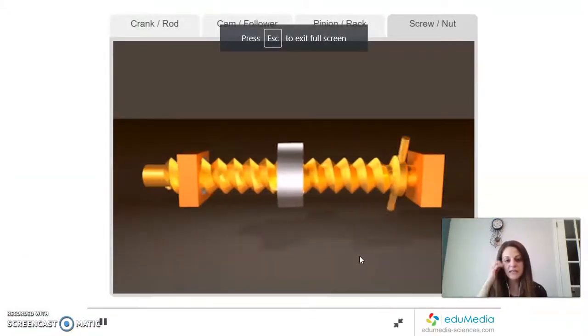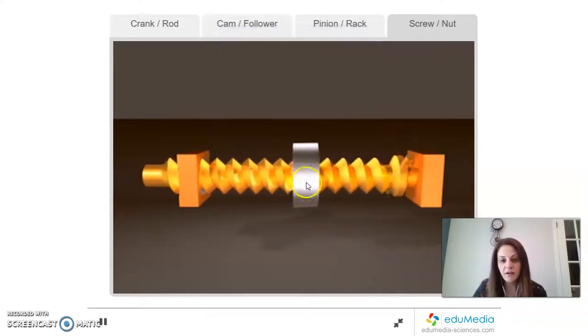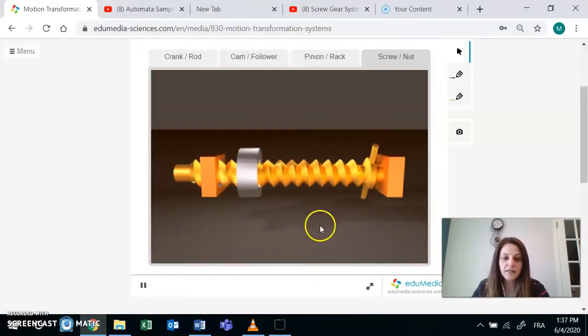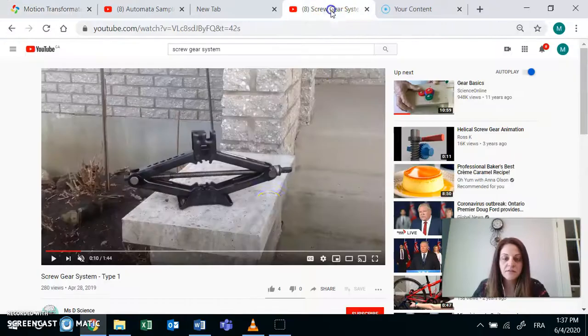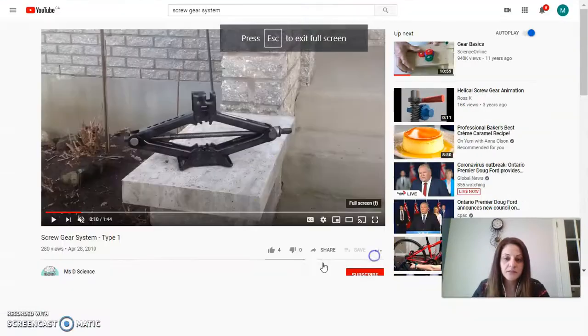So as the screw rotates, the bolt on top is translating. And this really works for the jack of a car, like here. Everybody see that?